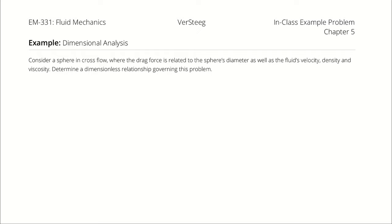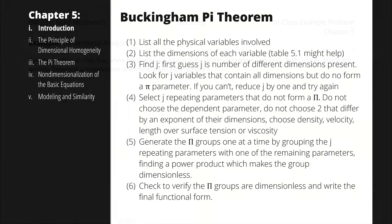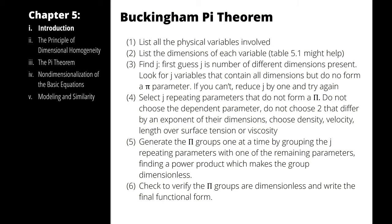Consider a sphere in cross flow where the drag force is related to the sphere's diameter as well as the fluid's velocity, density, and viscosity. I want to determine a dimensionless relationship governing this problem. To do that I'm going to use the Buckingham-Pi theorem, which requires that I first start by identifying all the physical variables involved.